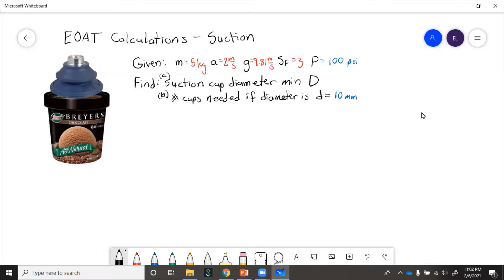First, let's find what is the minimum suction cup diameter that you could use to lift this with a single cup. And then second, we'll find what is the number of cups needed if we only have cups of a certain given diameter D.